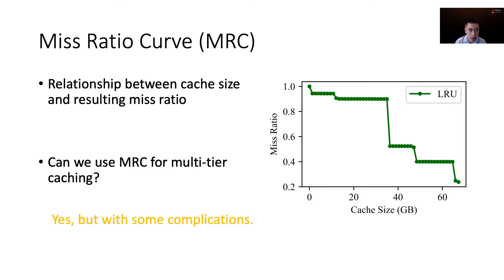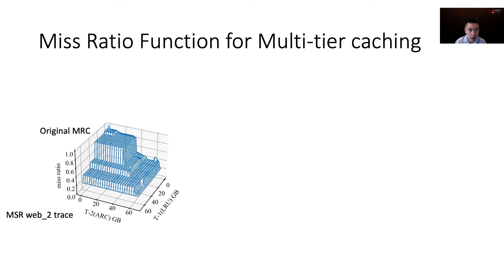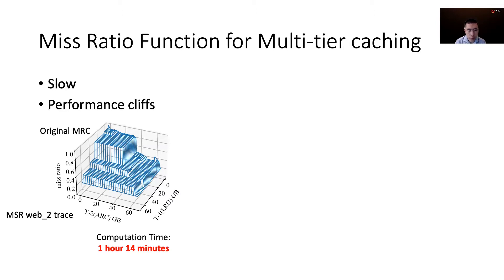But it also comes with some complications. Here is a three-dimensional miss ratio surface for two-tier caching. First, it takes a very long time to generate. This is very relevant for online caching management systems, as you will want to regenerate the MRCs periodically to follow the workload dynamics. For this particular long trace, it takes 1 hour 14 minutes to generate. Second, it has performance cliffs in all directions. A performance cliff is a sudden change of miss ratio value with respect to a small change of cache size. If cache configuration is allocated near a cliff area, a small change in workload behavior may cause the miss ratio to fluctuate by a large amount.